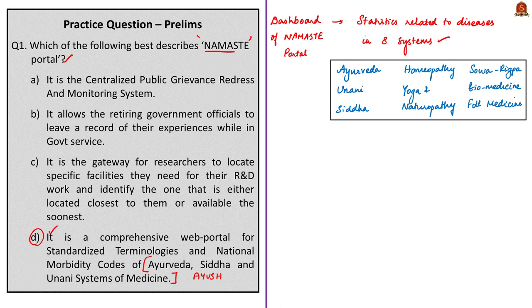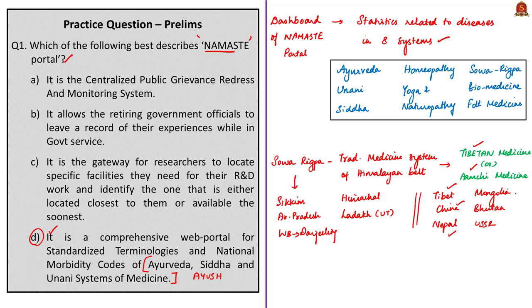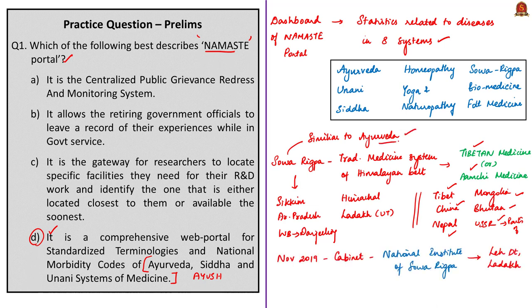Sovarigpa is a traditional medicinal system of the Himalayan belt in India, popularly known as Tibetan medicine or Aamchi medicine. In India, it is practiced in Sikkim, Arunachal Pradesh, Darjeeling in West Bengal, Himachal Pradesh, and the Union Territory of Ladakh. Outside India, it is practiced in Tibet, parts of China, Nepal, Mongolia, Bhutan, and even parts of the former Soviet Union. According to the Ministry of Ayush, the majority of the theory and practice of Sovarigpa is similar to Ayurveda. In November 2019, the Union Cabinet approved the establishment of a National Institute for Sovarigpa in Leh district of Ladakh.